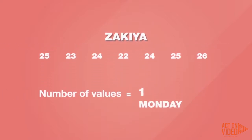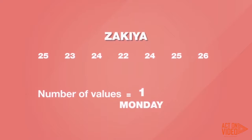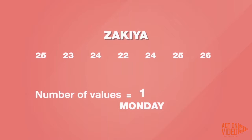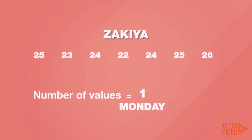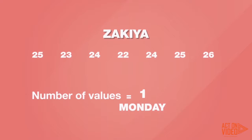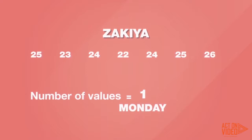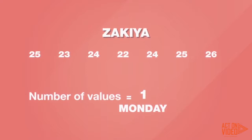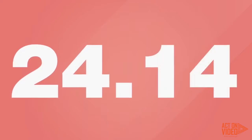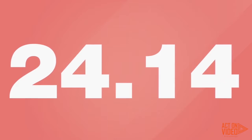To calculate the mean for Zakia's times, we need to get the total for the numbers in her data set — in this case, 169. And then divide this total by the number of values we have in the set. We recorded a time every day from Monday to Sunday, so we have 7 values in the set. To get Zakia's mean, we divide the total of her values, 169, by the number of values, 7. Zakia's mean is 24.14.